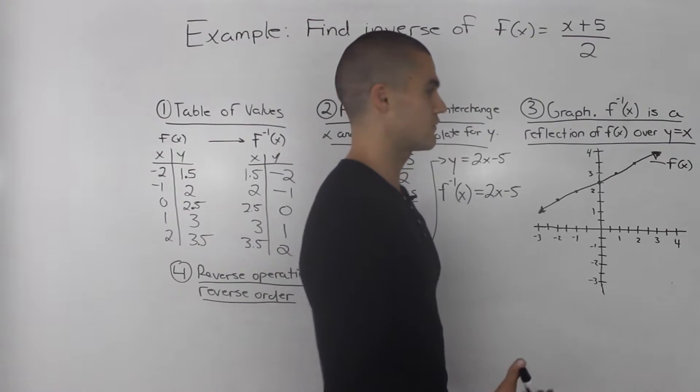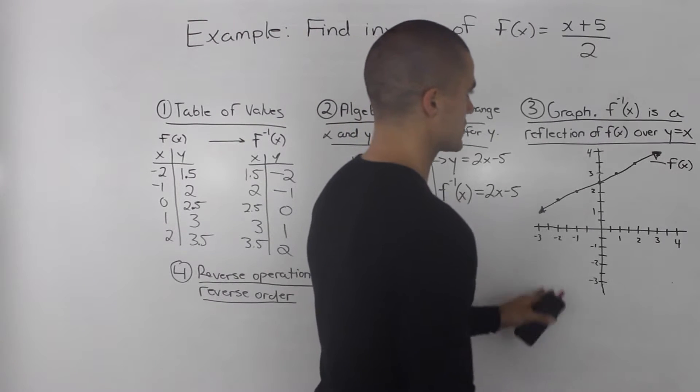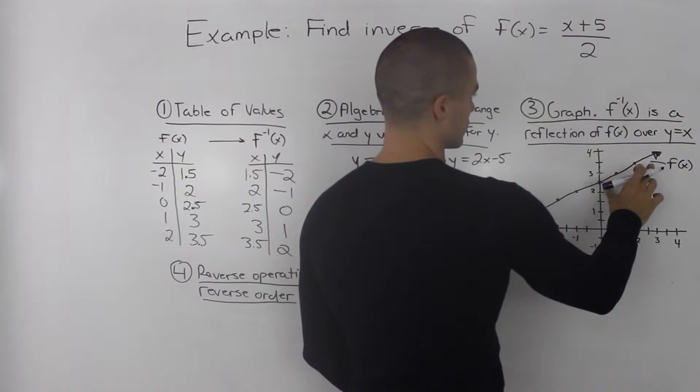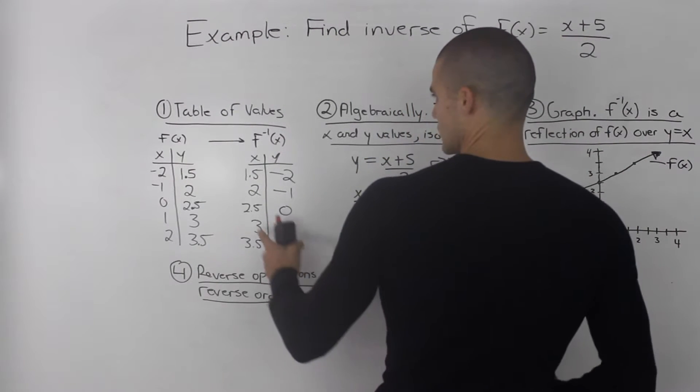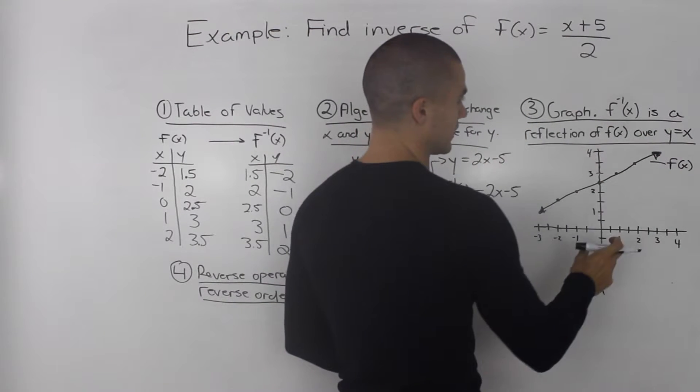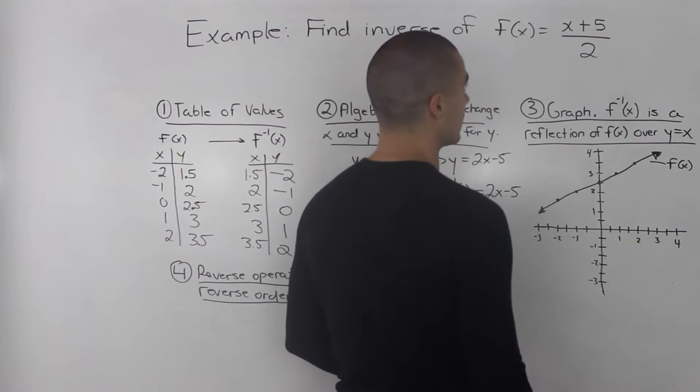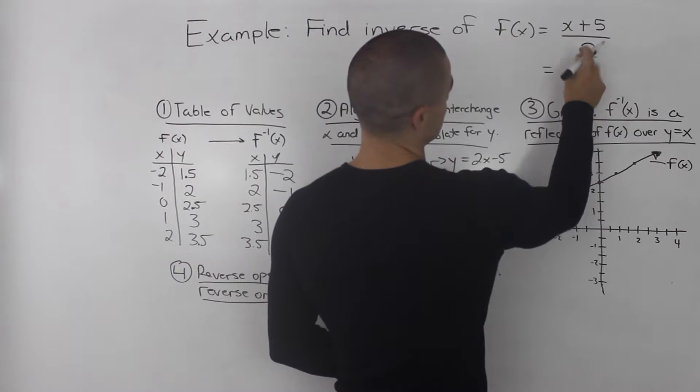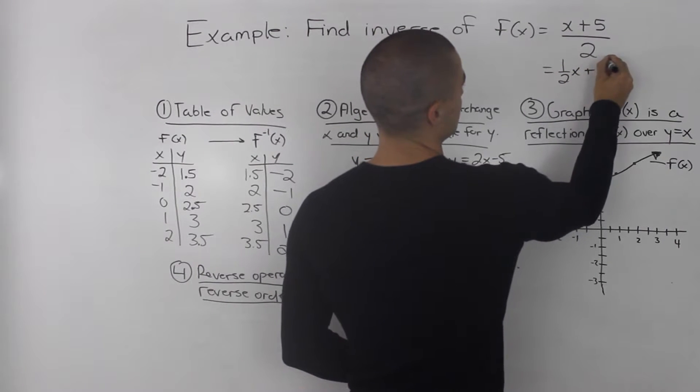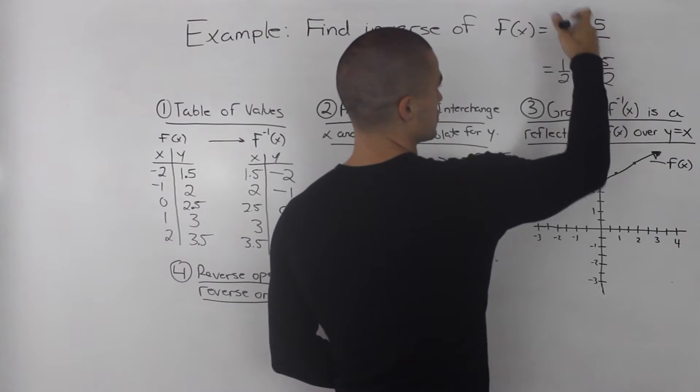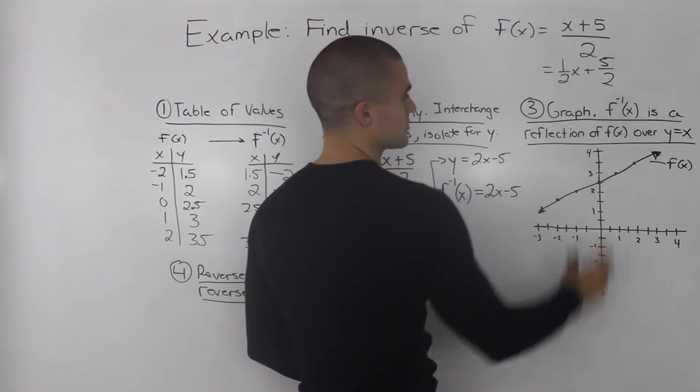The third way in finding an inverse is through a graph. So I started off by graphing the original function that we were given, (x+5)/2. And you can just take the table of values and plot the points. And it should be a straight line. It doesn't look like a straight line in my graph, but it should be. And if you think about it, you can rewrite this function as (1/2)x + 5/2 if you split up the term into two fractions. And that represents a line.